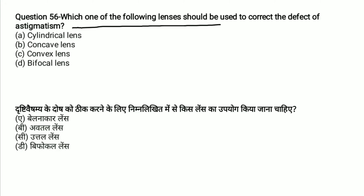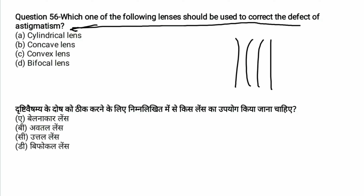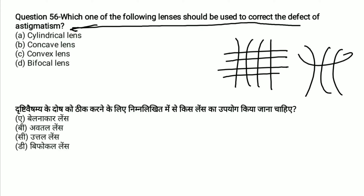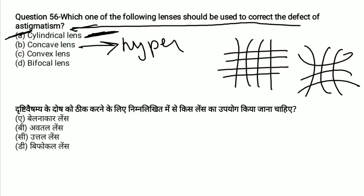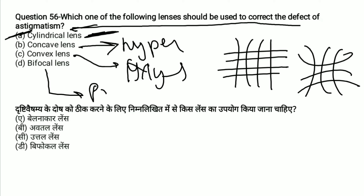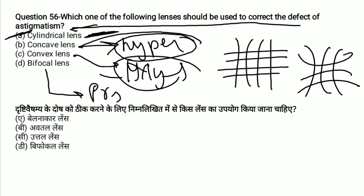Which lens should be used to correct the defect of astigmatism? In a normal eye, vision is clear, but with astigmatism, the image appears distorted. The correct lens to use is a cylindrical lens. Convex lens corrects hypermetropia (long-sightedness), concave lens corrects myopia (short-sightedness), bifocal lens corrects presbyopia, and cylindrical lens corrects astigmatism. The answer is A.